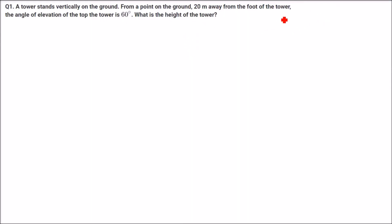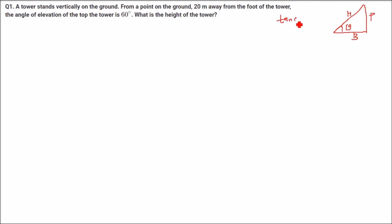Before I go ahead, most of the time we are going to take the tan of an angle. That means in a triangle with angle theta, this is perpendicular, this is hypotenuse, and this is base. So most of the time we are going to take tan theta, that is perpendicular by base. Sometimes we may take sin theta or cos theta, but most of the time questions are solved using tan.